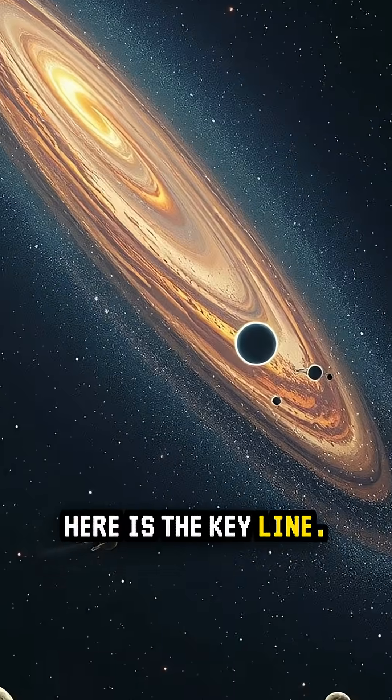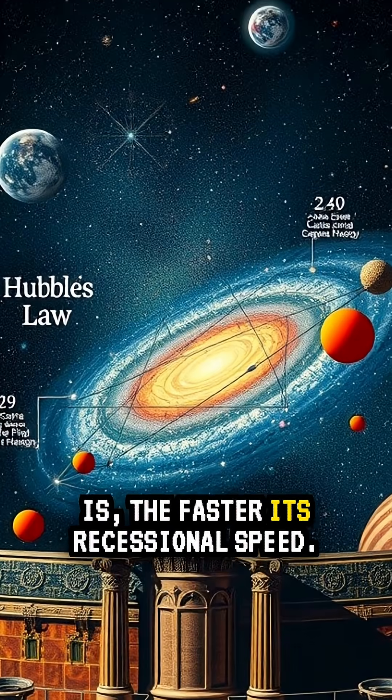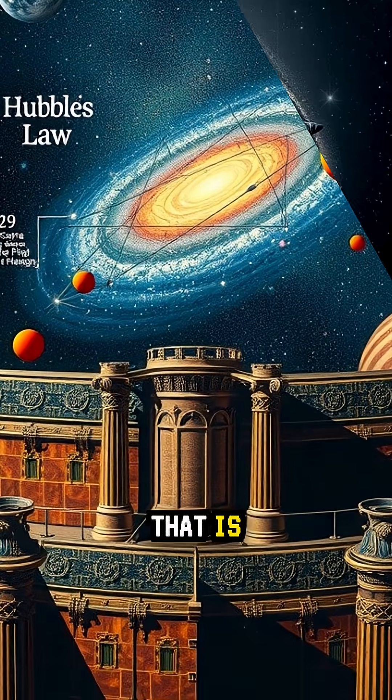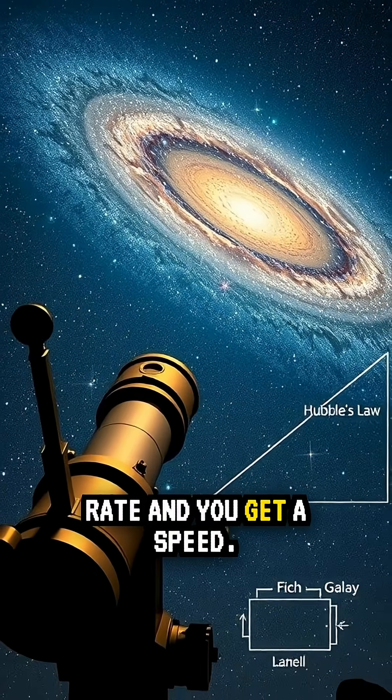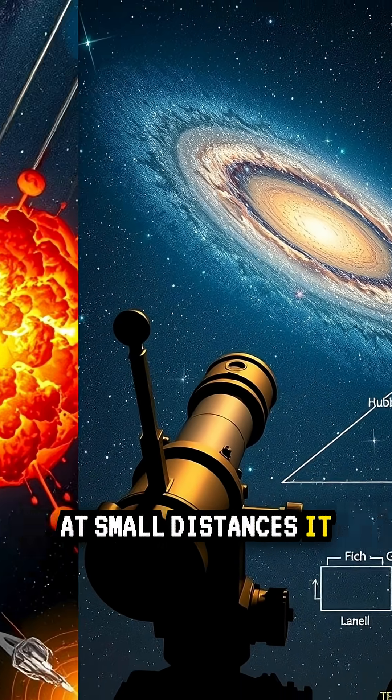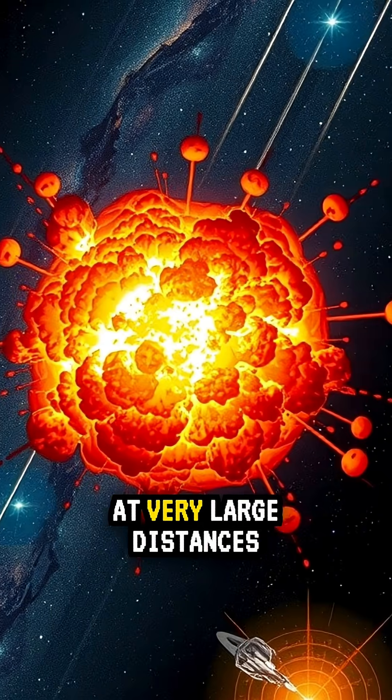Here is the key line. The farther away something is, the faster its recessional speed. That is the Hubble law. Multiply distance by the expansion rate, and you get a speed. At small distances, it is well under light speed.